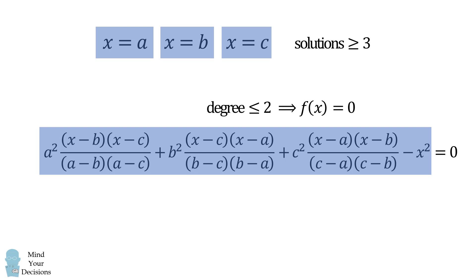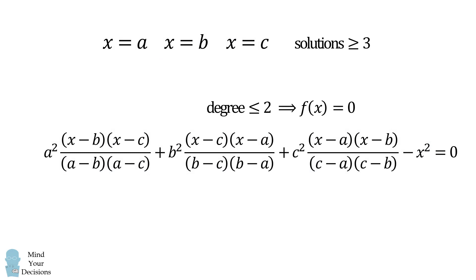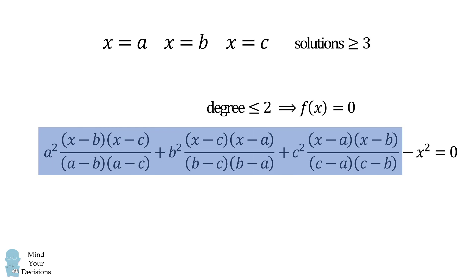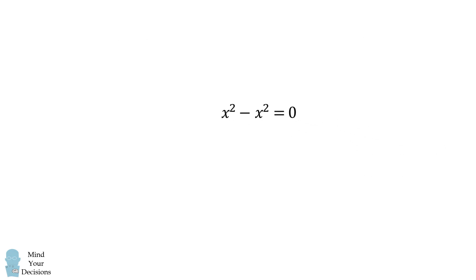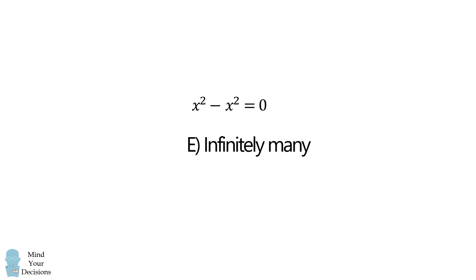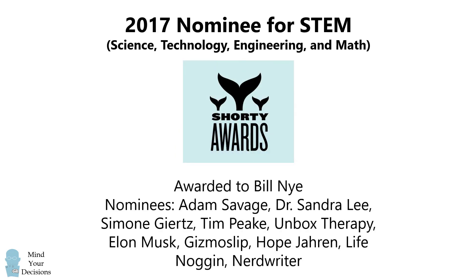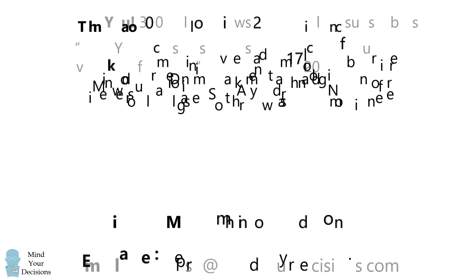f(x) must equal zero. The only way this works is if the first three terms are exactly identically equal to x squared, so the equation simplifies to x squared minus x squared equals zero. This is true for every single value of x. Therefore the correct answer is infinitely many solutions. What an interesting algebra problem! Thanks for making us one of the best communities on YouTube. See you next episode of Mind Your Decisions, where we solve the world's problems one video at a time.